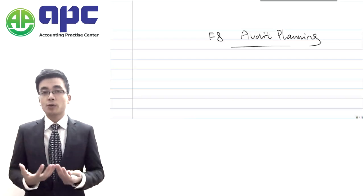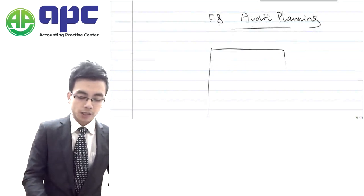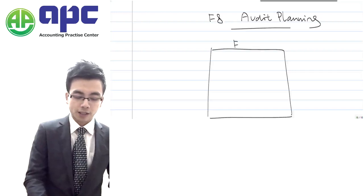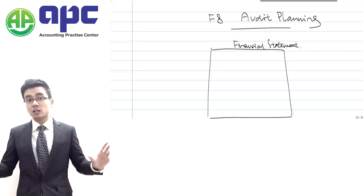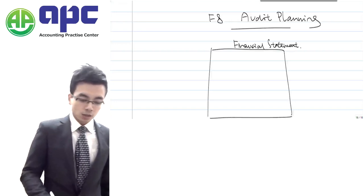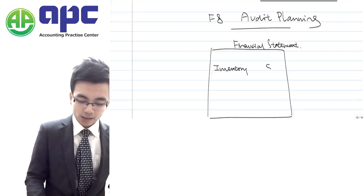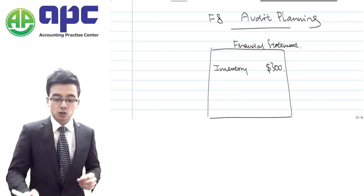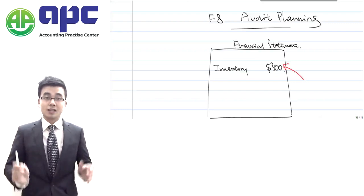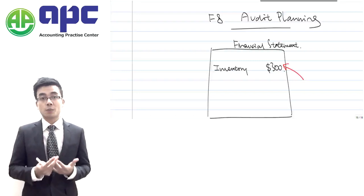From an auditor's point of view, why do we need audits? The simple reason being, we are going to express our opinion on the true and fairness of the client's financial statements. One of the financial statements of the client's company would be the statement of financial position. Within the SFP, which is the statement of financial position, it shows the inventory as at the year end is to be $300.